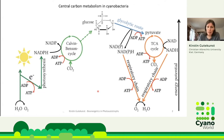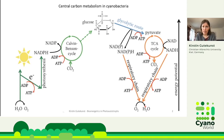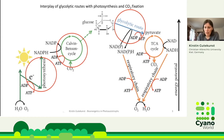This is a reminder of the players of the central carbon metabolism in cyanobacteria and also in plants. What you see here is the light reaction of photosynthesis, which starts with the splitting of water, and then you get ATP and NADPH. They are both used in the Calvin-Benson cycle for CO2 fixation, and carbohydrates are formed — the autotrophic or anabolic part of the metabolism. This carbohydrate can then be broken down by different glycolytic routes to pyruvate, fed into the TCA cycle, and electrons are brought back to oxygen.